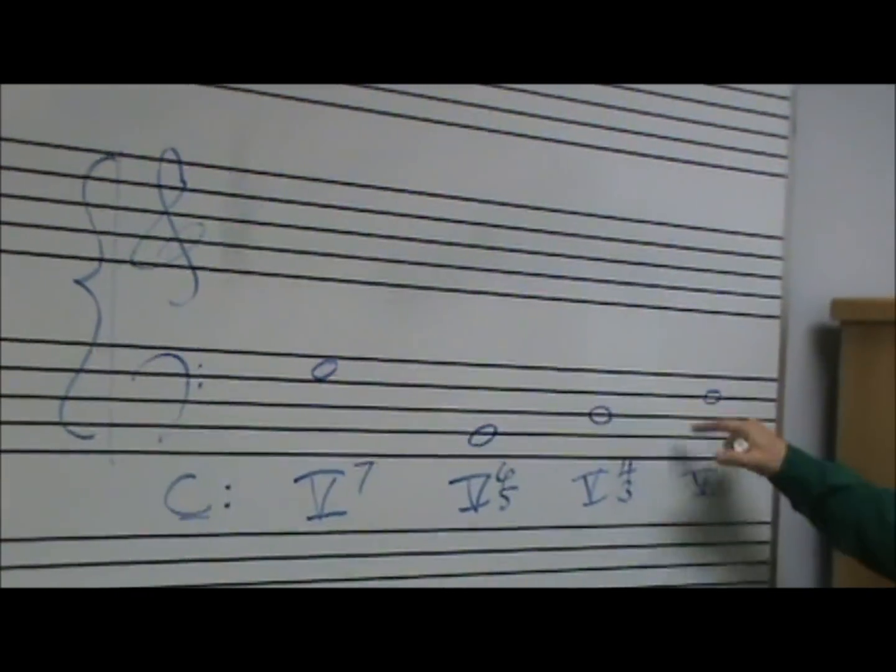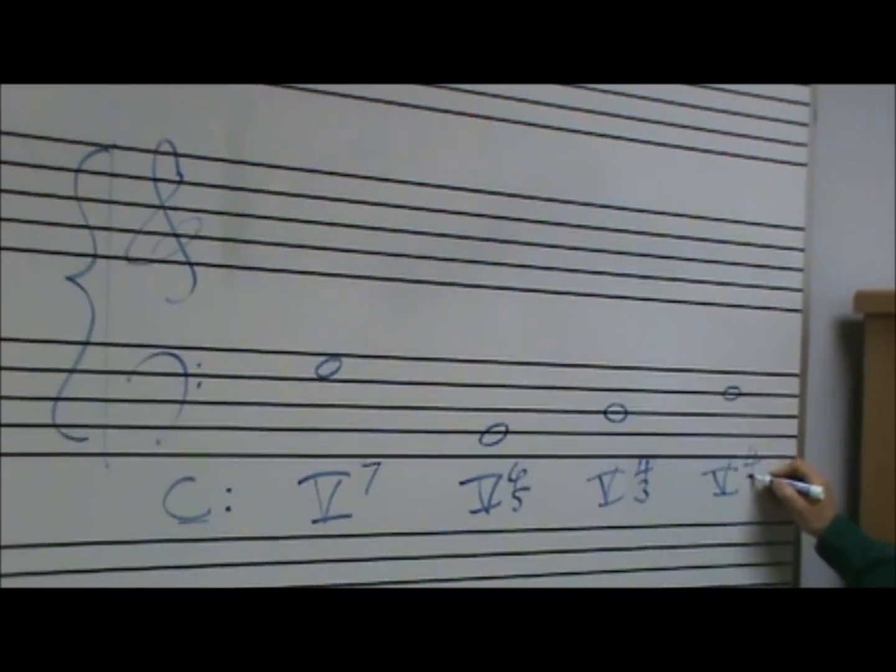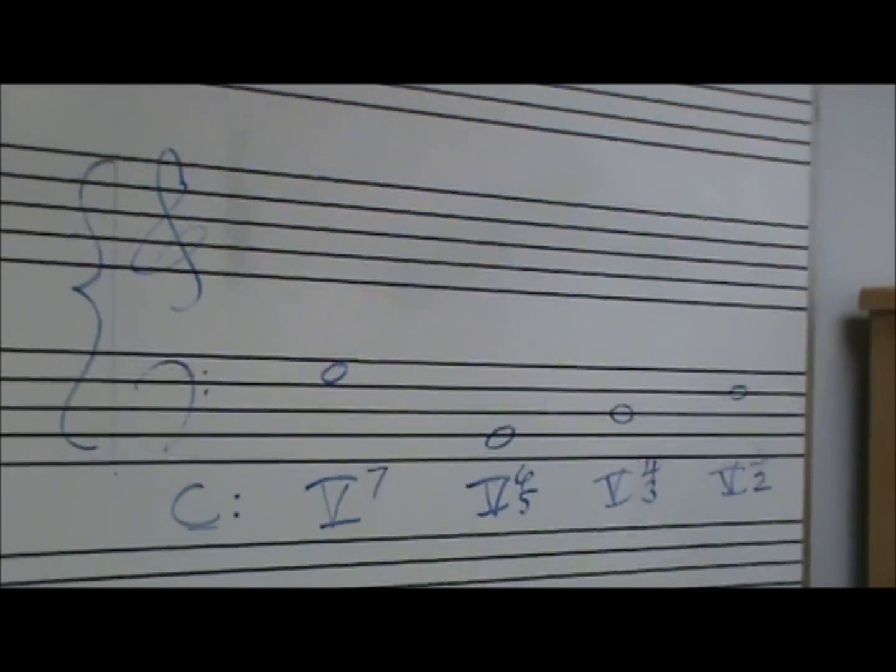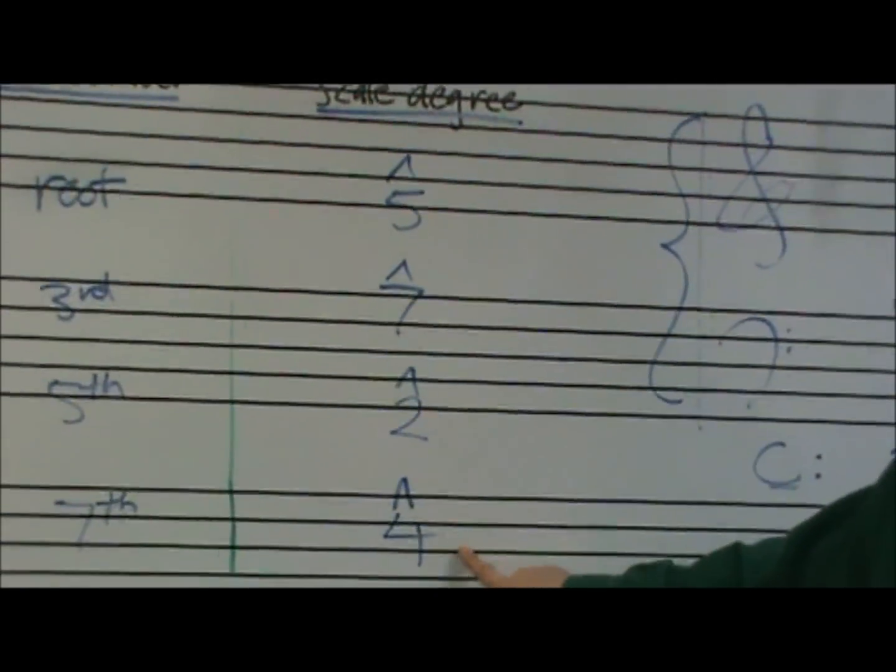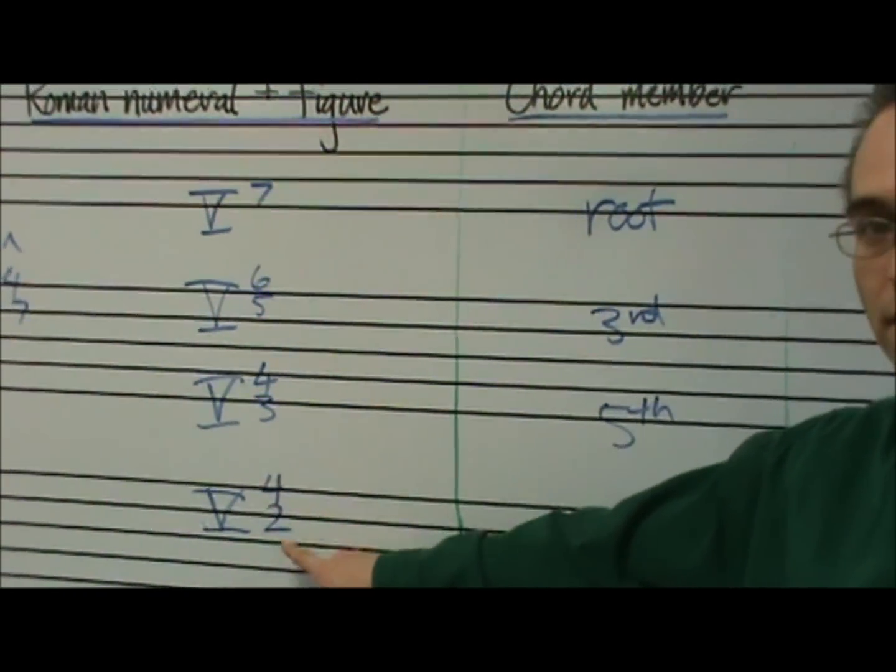And one last one, if I have scale degree 4 in the bass and I hear a dominant 7th sound, I'm going to write that down automatically because I know that scale degree 4 in the bass with a dominant 7th sound means it's got to be 542.